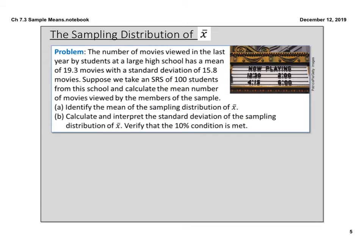Let's look at an example. The number of movies viewed in the last year by students at a large high school has a mean of 19.3 movies with a standard deviation of 15.8 movies. A simple random sample of 100 students is taken. Part A: identify the mean of the sampling distribution of x-bar — it equals the population mean, which is 19.3 movies. Give your answer context.